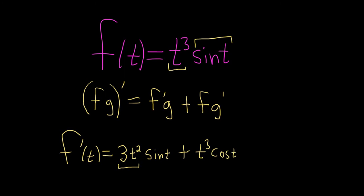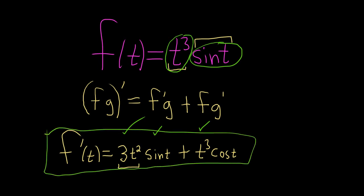Let's double check our work. The derivative of the first is 3t², times the second, sin(t). Plus the first, t³, times the derivative of the second, which is cos(t). That is the final answer.